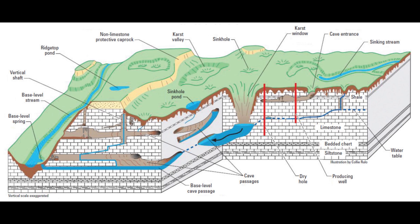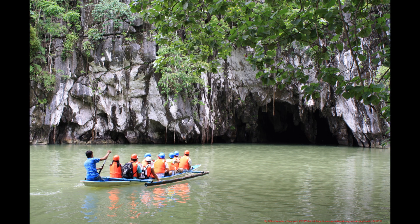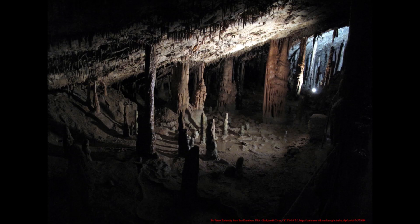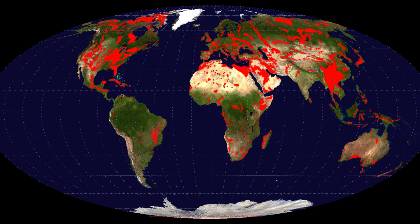Karst landscapes are generally soluble rocks that form into caves and underground drainage systems. The process of erosion is quite extreme and can leave some truly incredible landscapes and landforms. The following image shows the global distribution of major outcrops of carbonate rocks. As you can see, karst landscapes are common throughout the world.